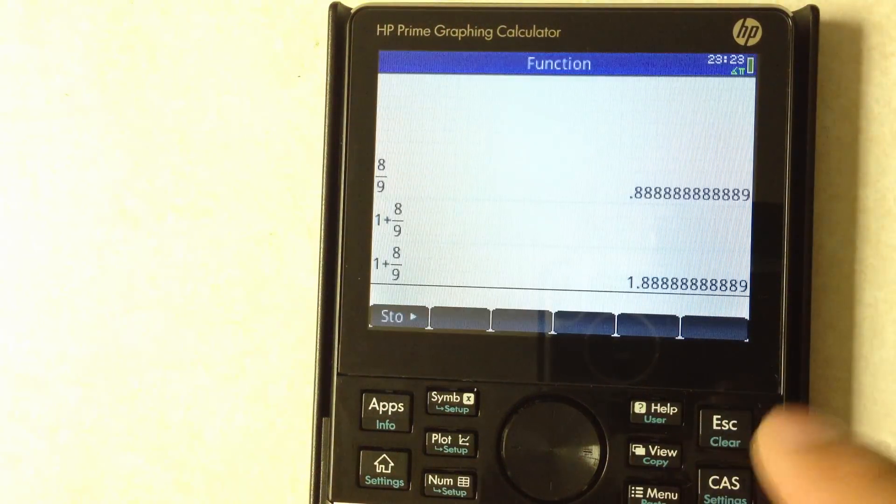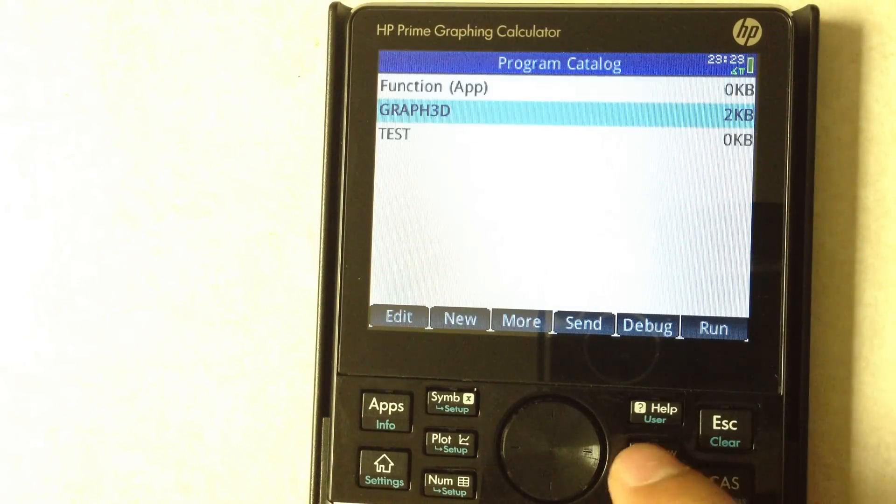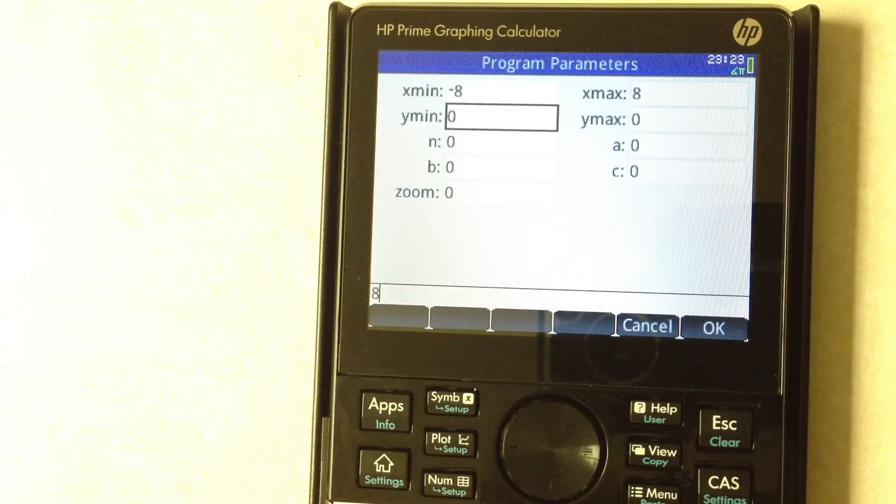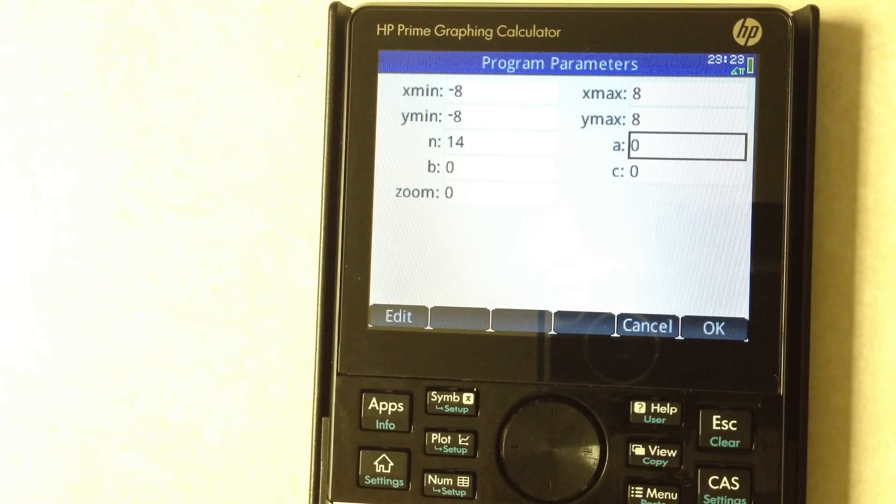I need to get out of here, go back to my program and let's run this. This time from negative 8 to 8, and again negative 8 to 8. We'll do 14 by 14.